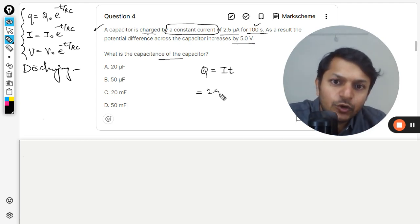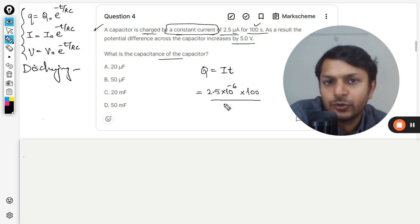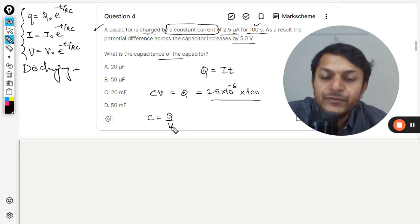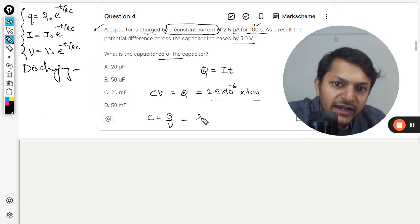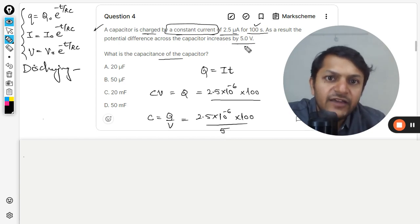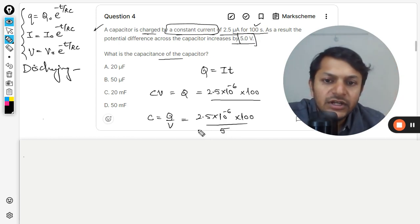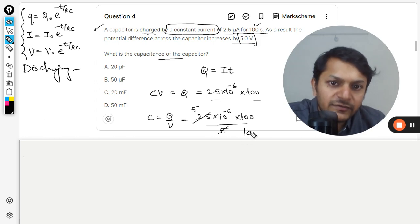We will first find the total charge which is flowing, so this is the current in microamperes multiplied by the time, which is 100 seconds. Be very careful that all units should be SI. So this is the total charge Q, and Q equals CV. We want to find C, which means Q has to be divided by the potential V. So clearly we would be dividing this equation by 5 volts. Because the voltage is 5, we divide by 5 and we find the answer.